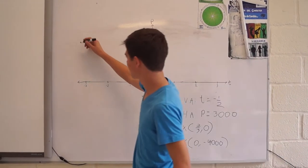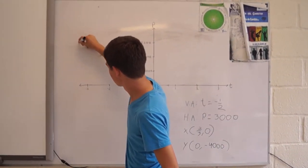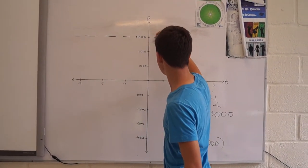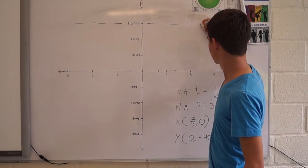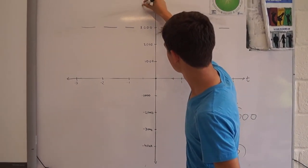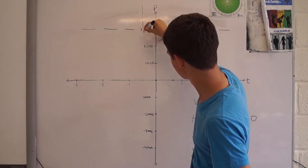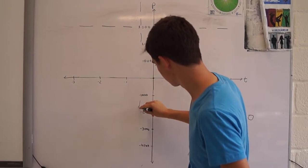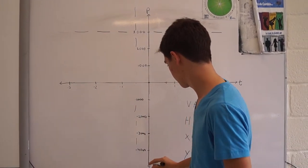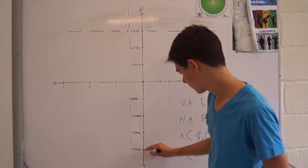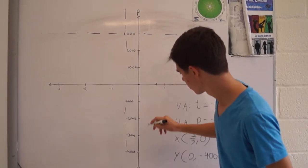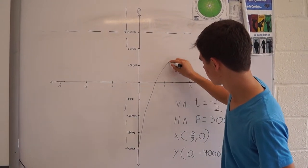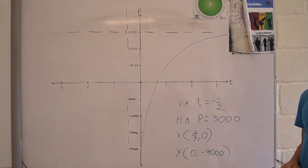Now, to graph it, first we get the horizontal asymptote. In this case, it is 3,000, because it never crosses it in P. Then we get the vertical asymptote, which is negative 0.5T. And now we just graph it.